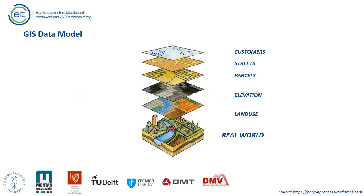A geospatial data model is a set of constructs for representing objects and processes in the digital environment of the computer. The spatial data are organized as thematic layers, and each layer represents a single class of features such as streets, parcels, administrative boundaries, vegetation cover, or elevation. When combined, these layers make the digital representation of part of the real world that we model in GIS.